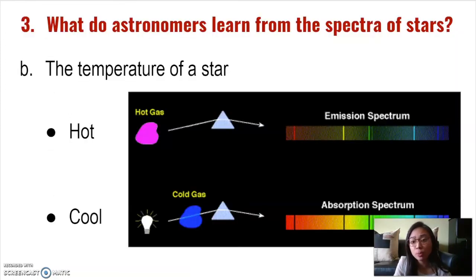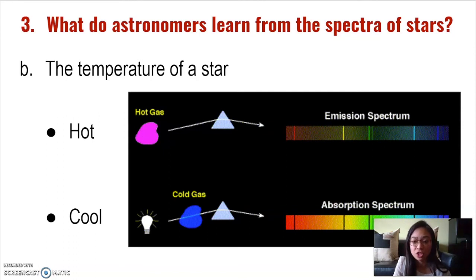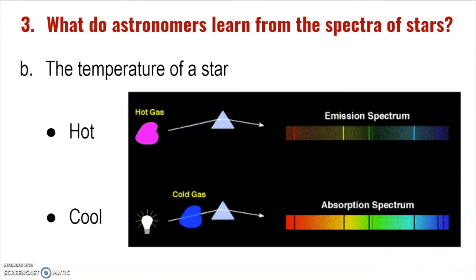We can also use spectra to determine the temperature of a star. Whether a bright line spectrum or dark line spectrum is created gives us information about temperature. The emission spectrum shows bright lines appearing in the same spots as dark lines in the absorption spectrum. When a gas is hot, it will emit lines of light, producing an emission spectrum. Cool atmospheric gases tend to absorb the same lines of light. Therefore, depending on the spectra seen, we can determine if a star is hotter — emission spectrum — or cooler — absorption spectrum — relative to the background.